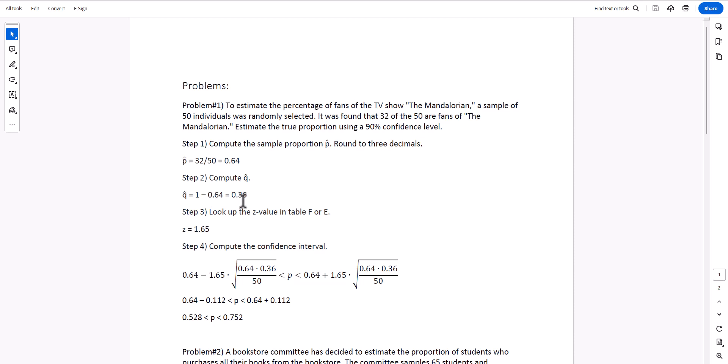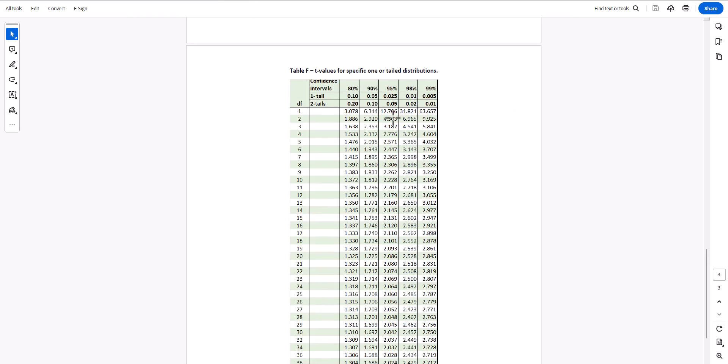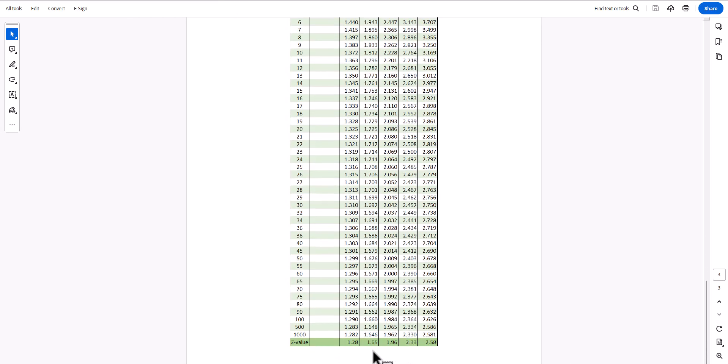We look up the z-value using 90%. So 90%, we go down to the z-value, 1.65.